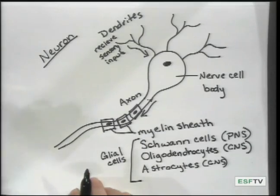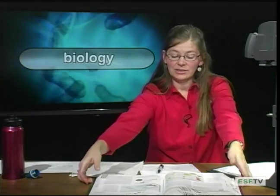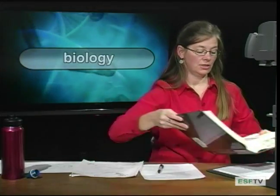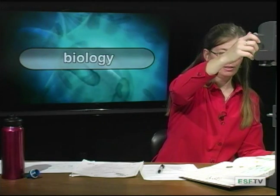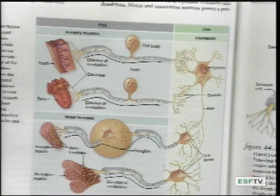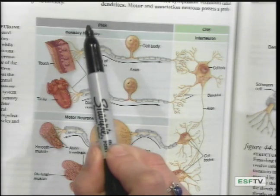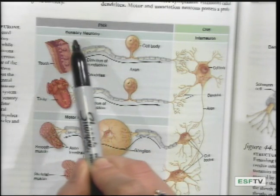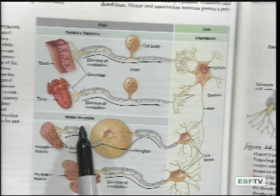From here, let's talk a little bit about how the nervous system is divided into the peripheral nervous system and the central nervous system. With that, let's go to this drawing within our textbook. So along the top, this is the peripheral nervous system, composed of sensory neurons and motor neurons.